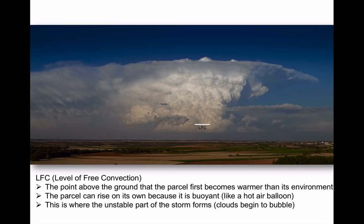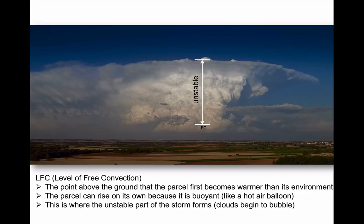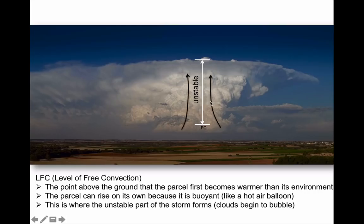Why does the thunderstorm bubble? At some point near the bottom of the storm, the parcel as it rises becomes warmer than its environment. That's the part of the atmosphere we call unstable — typically unstable from that point where the parcel first becomes warmer than its environment all the way to the very top of the storm where the anvil cloud forms. In this unstable region, the atmosphere supports vertically rising air all on its own accord — just like a hot air balloon. The point where free rising starts is called the level of free convection.